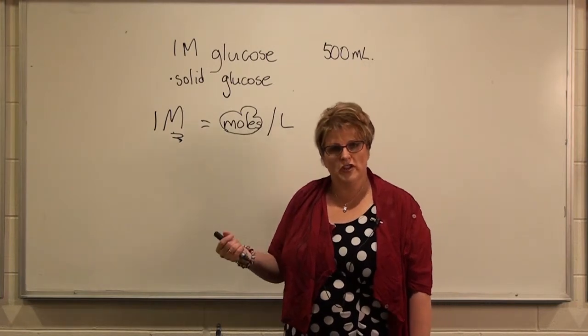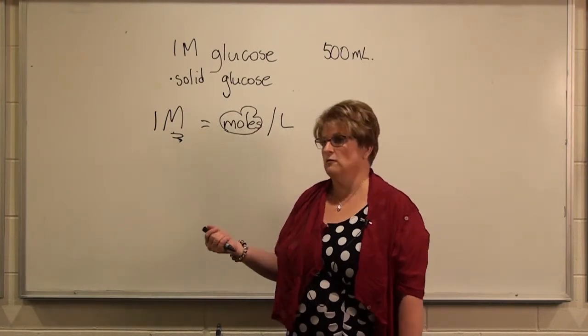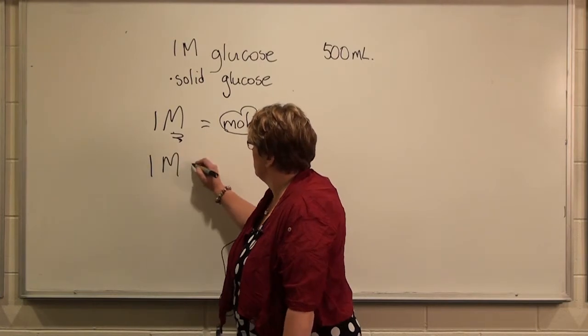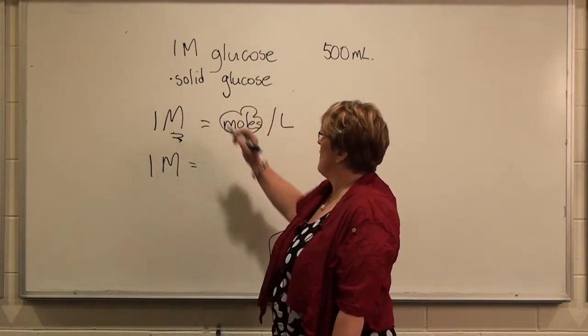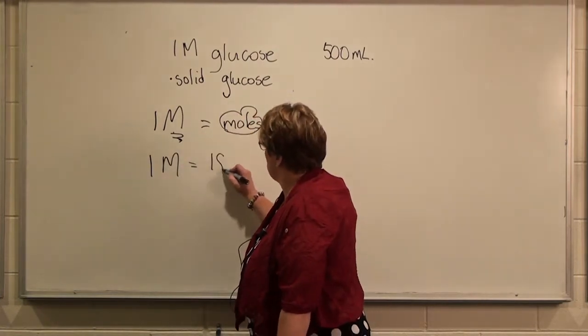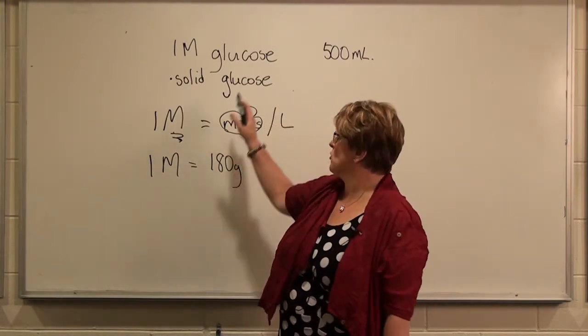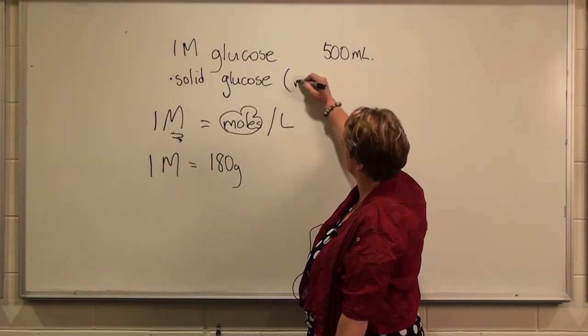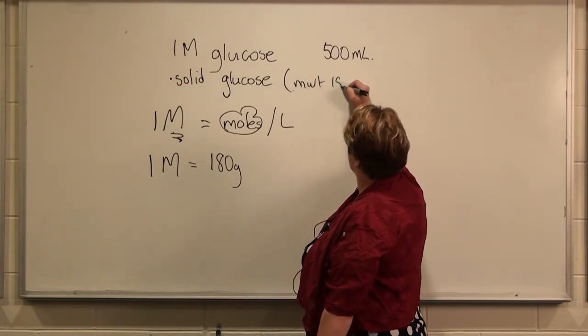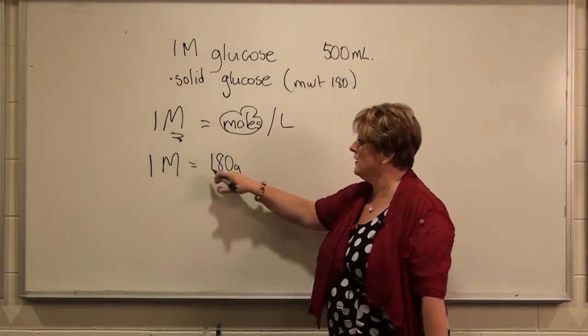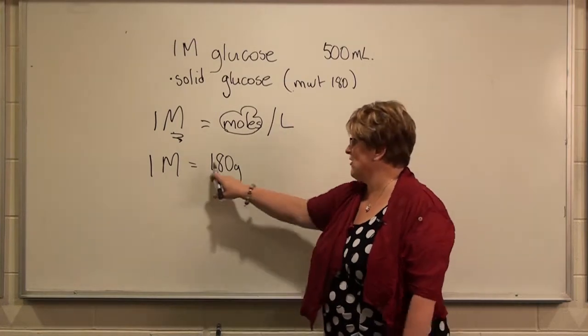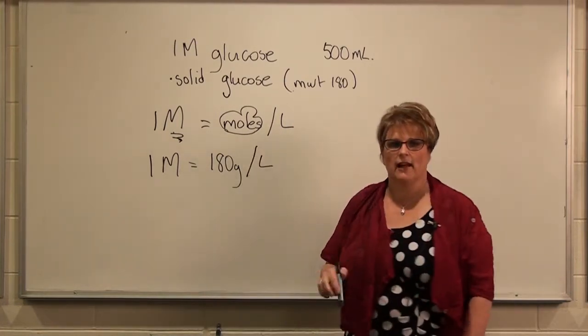From first-year chemistry, you should also know that one molar means that you have the molecular weight in grams of the actual compound. So glucose has a molecular weight of 180. One molar is 180 grams per litre.